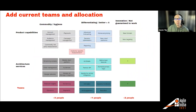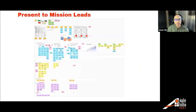While validating with product leads, I also added current teams and allocations — how many people are associated with each category — which we could then think about: does this make strategic sense? Should we have too many people working on particular things? Finally, I presented to the mission leads as a summary. This is more reflective of how the overall thing looked, and then we went from there.